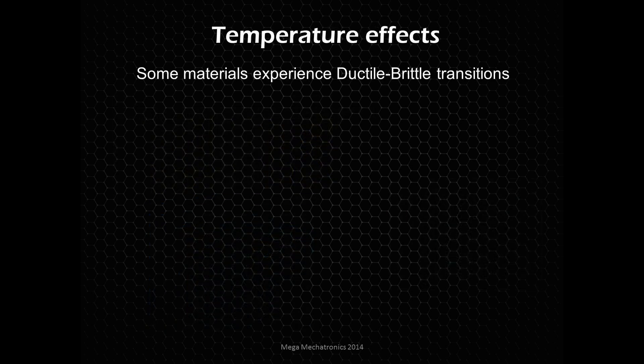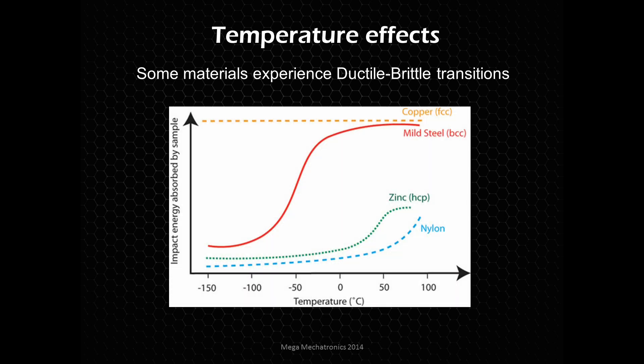Temperature does affect ductility, and some materials experience a ductile-brittle transition. The vertical axis is the amount of energy absorbed — the tougher it is, the higher it is — and we have a temperature scale at the bottom. Copper maintains its ductility across a wide range of temperatures. Mild steel has a body-centered cubic structure, while copper is face-centered cubic. Body-centered cubic structures exhibit the ductile-brittle transition — mild steel starts getting more brittle around zero degrees. Zinc and nylon are pretty brittle around room temperature.